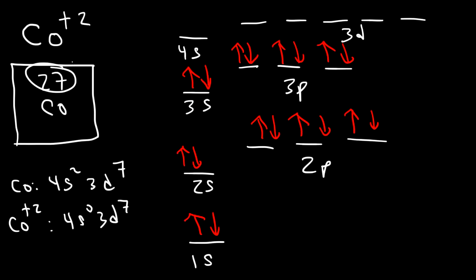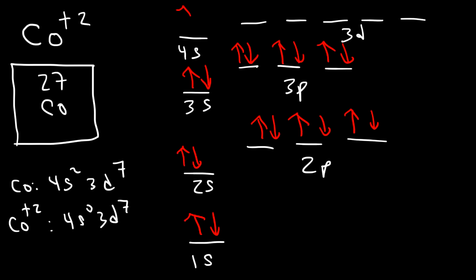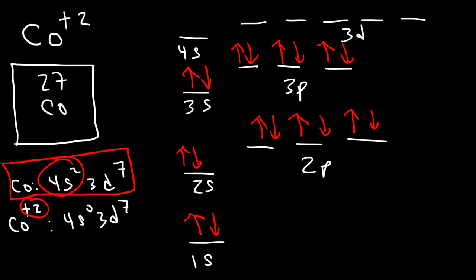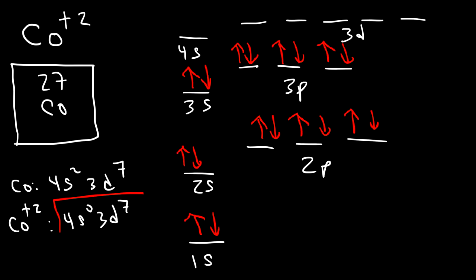If you had simply subtracted 2 from the total and filled the diagram, you would get 4s2, 3d5 instead of the correct 4s0, 3d7. When dealing with transition metal ions, it's best to write the electron configuration of the transition metal atom first, then for a positively charged ion, remove the corresponding electrons from the highest energy level. Once you have the correct electron configuration for the transition metal ion, you can fill the orbital diagram. So we put nothing in the 4s level and place 7 electrons in the 3d sub level. Make sure to always take off electrons from the highest energy level.